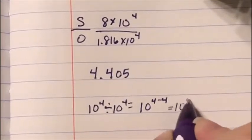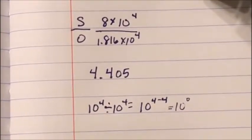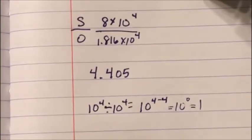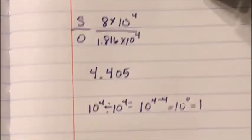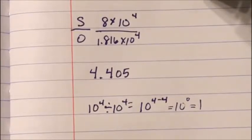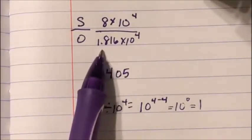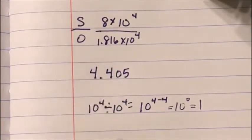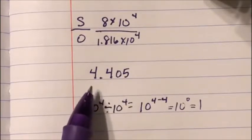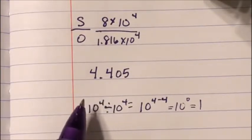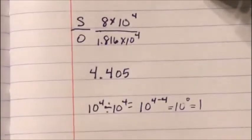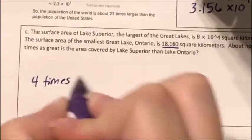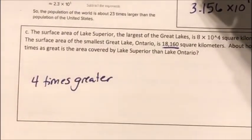Anything to the zero power equals 1, so I multiply 4.405 by 1. Rounding to the nearest whole number gives approximately 4. So Lake Superior's area is about 4 times greater than Lake Ontario's area.